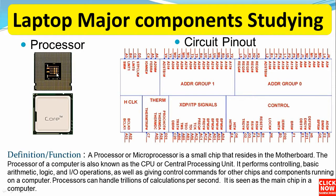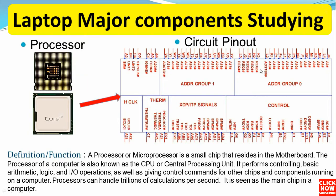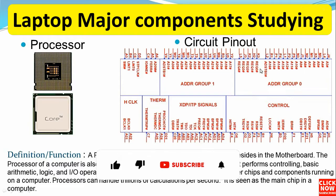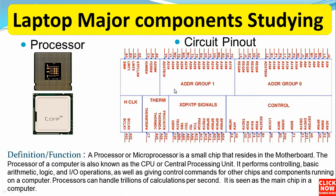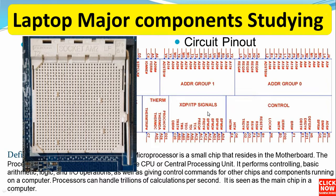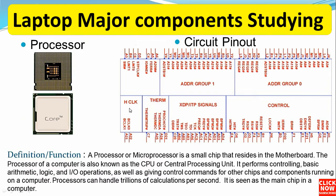The first component is the processor, or the CPU — central processing unit. As you can see here we have the processor, and over here we have a circuit pinout. This circuit diagram is not for the processor itself but for the CPU socket. It is divided into many control sections as you can see.